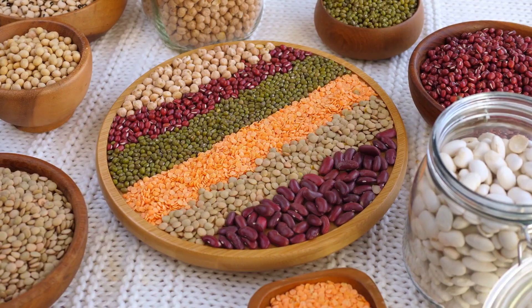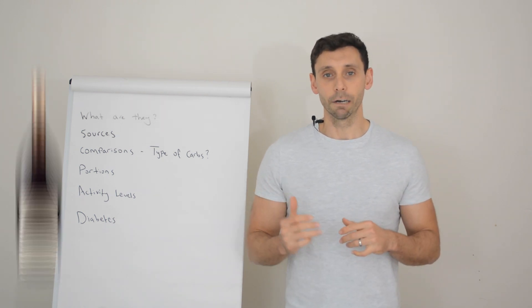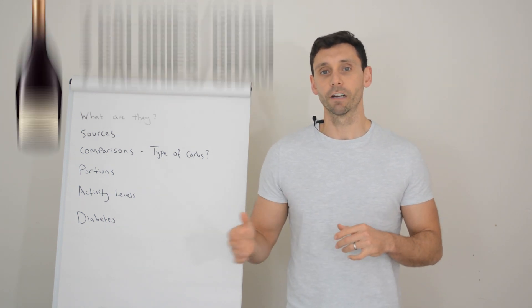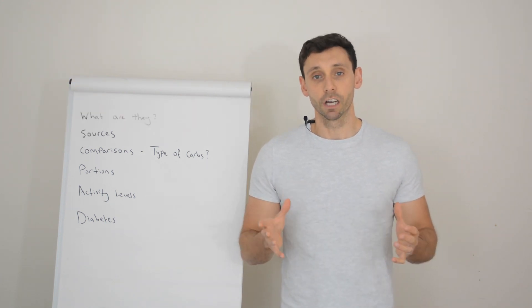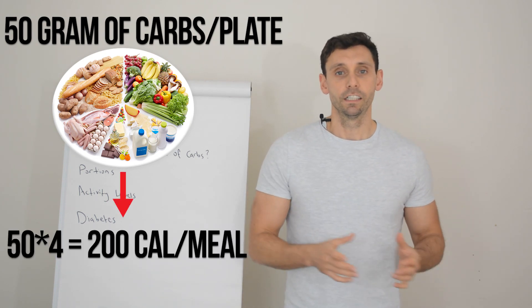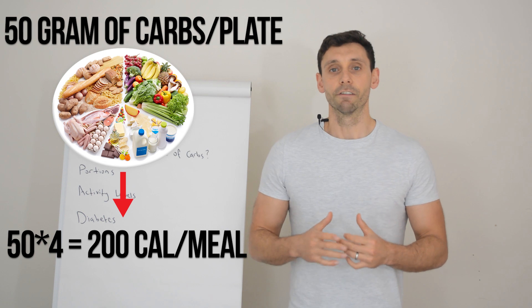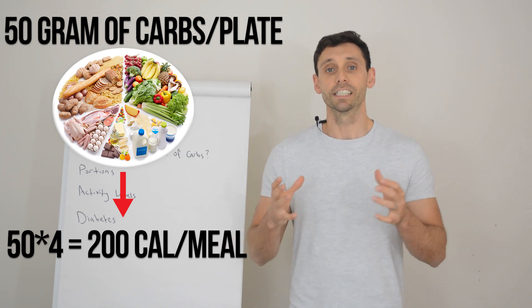Carbohydrates alongside protein provide four calories per gram of that nutrient. This is much less than alcohol, which provides seven calories per gram and fat, which provides nine calories per gram. So for example, if you had 50 grams of carbohydrates on your dinner plate, you'd have 50 times four calories. So you'd have a total calorie intake of 200 calories from carbohydrates at that meal.